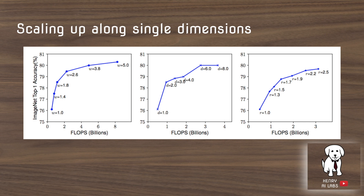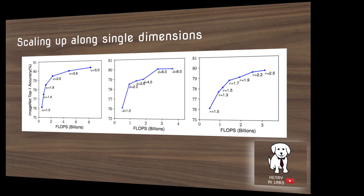I want to explain what is meant by the R coefficients and the resolution, because this is probably the most confusing part. R equals 1 denotes 224 by 224 input images, and R equals 2.5 represents something like 580 by 580 for the input image resolution.